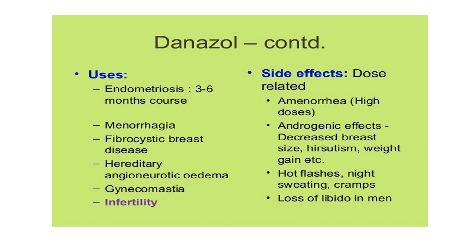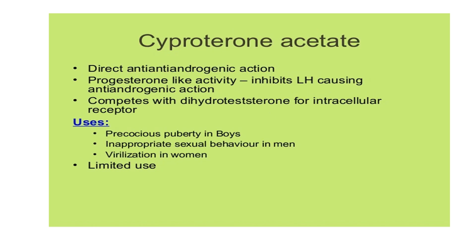Side effects of danazole are dose-related. At higher doses it can lead to amenorrhea. Androgenic effects include decreased breast size, hirsutism, and weight gain. Due to its progesterone activity, there are also hot flushes, night sweating, cramps, and loss of libido in men.